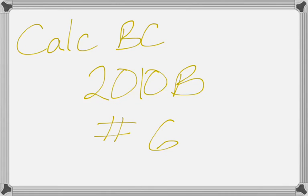Alright, this is number 6 from 2010 Form B Calc BC exam. It's a series question, and it's kind of a beast. Alright, the first part is we just need to find the radius of convergence, which is not bad. So there's our function, or our series.